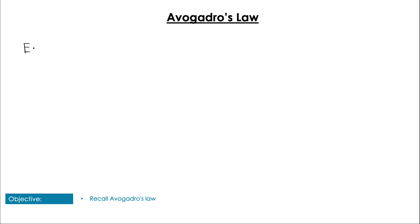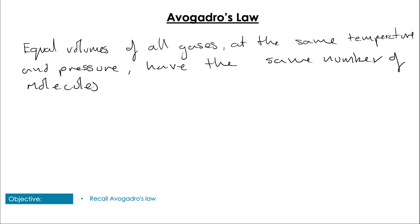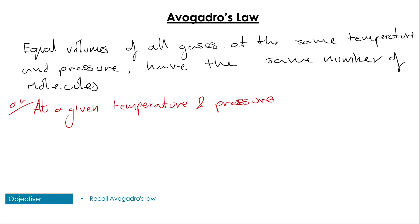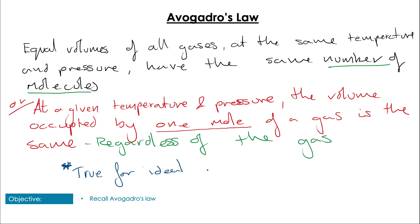So let's start with Avogadro's law. Avogadro's law is quite simple, although sometimes it can be a little bit tricky to phrase. What it states is that equal volumes of any gas at the same temperature and pressure have the same number of molecules. We know that number of molecules relates directly to moles, so at a given temperature and pressure, the volume occupied by one mole of gas is the same no matter what the gas is — regardless of the gas. This is true for all ideal gases.